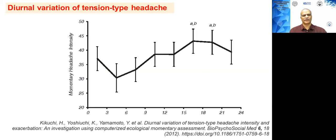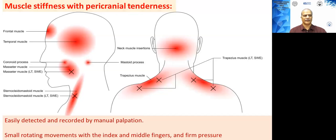Two important clues for tension type headaches: one is that these headaches tend to peak towards the evening time. Second, when you examine these patients, you may be able to elicit areas of muscle stiffness and tenderness. Palpating with your index and middle finger, you might find tender areas on the trapezius, sternocleidomastoid, masseters, and temporalis muscles.